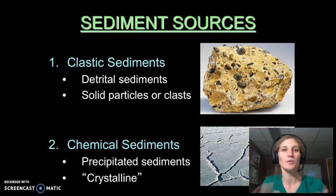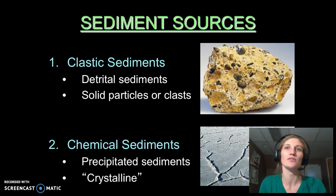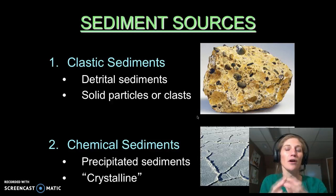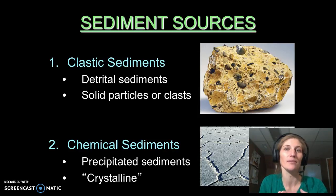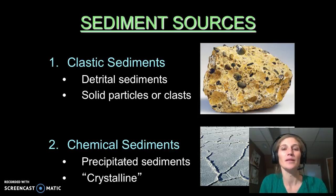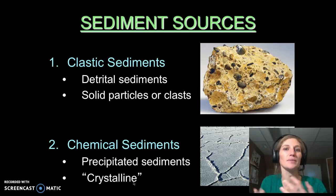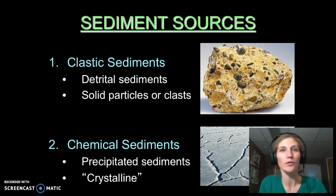When we talk about sedimentary rocks, we break them into two major types. We have clastic sedimentary rocks, made of detrital sediments or clasts — solid particles of other rocks. It can be any type: igneous, metamorphic, or sedimentary rocks can all become sediment that make up these clastic rocks. We also have chemical or biochemical sediments — precipitated sediments, often considered crystalline because they're precipitating out of water, either by chemical processes or biochemical processes because an organism is making it.